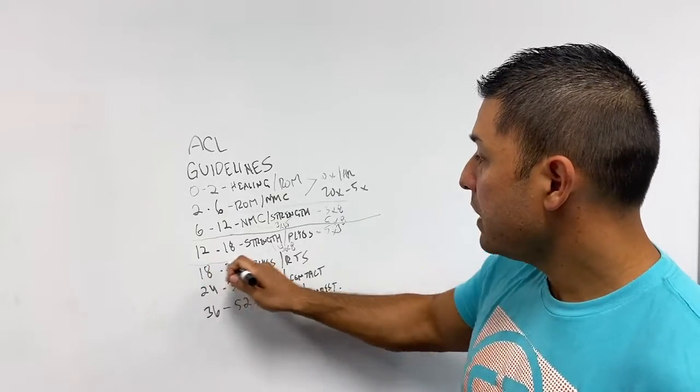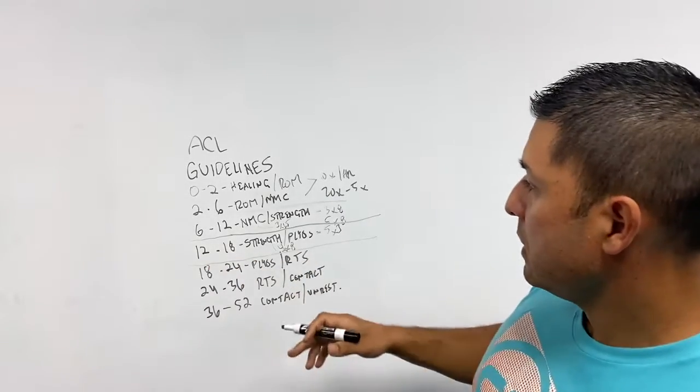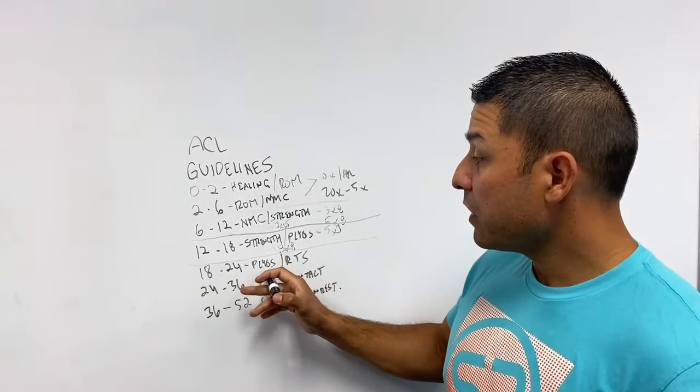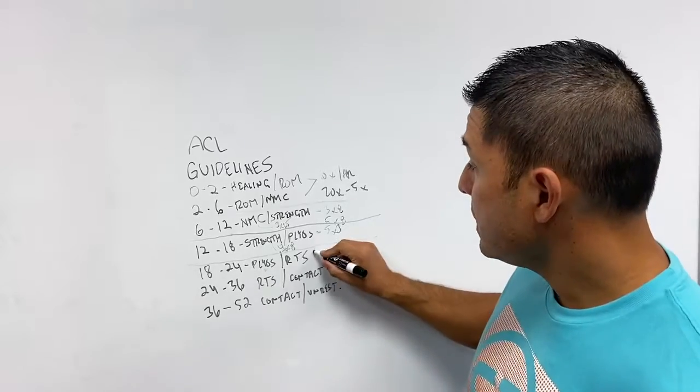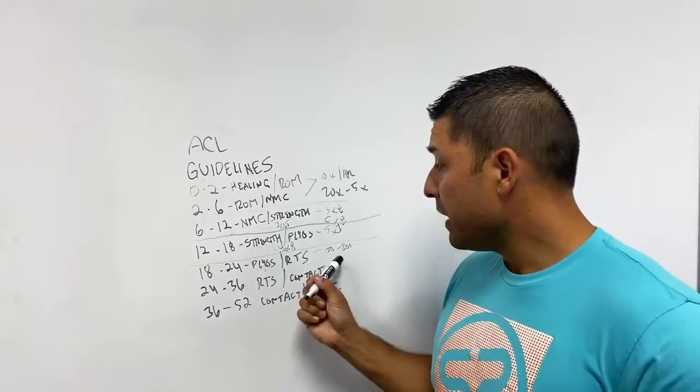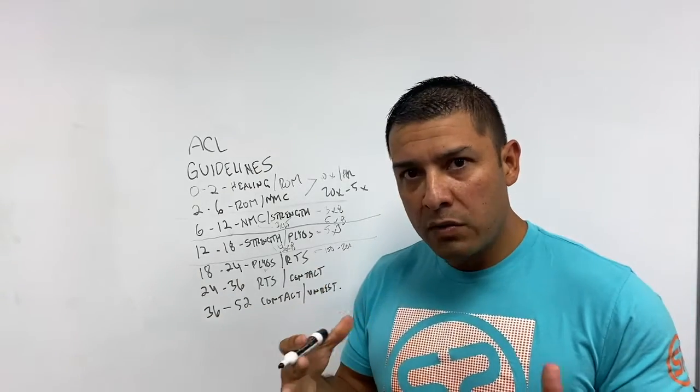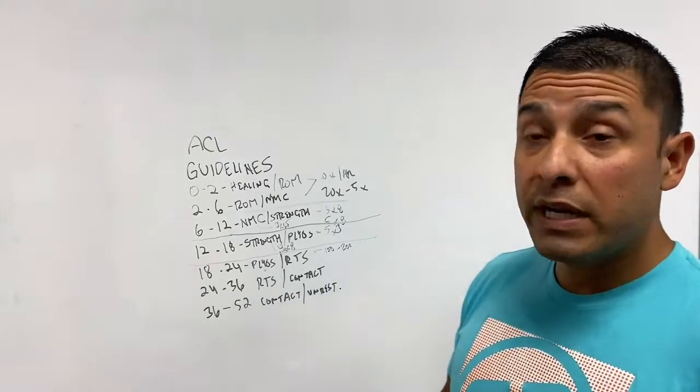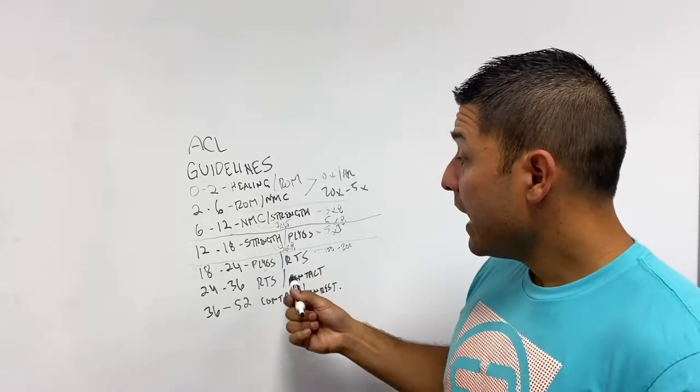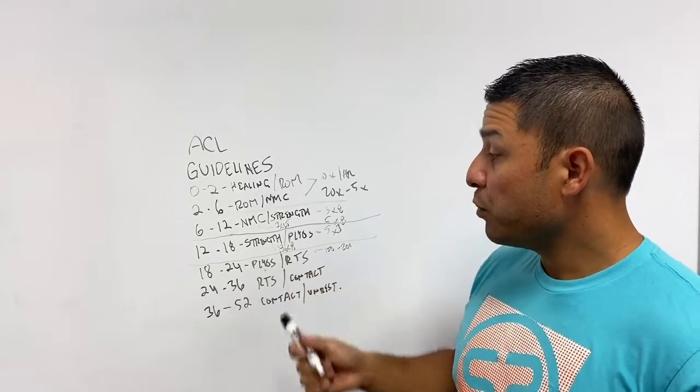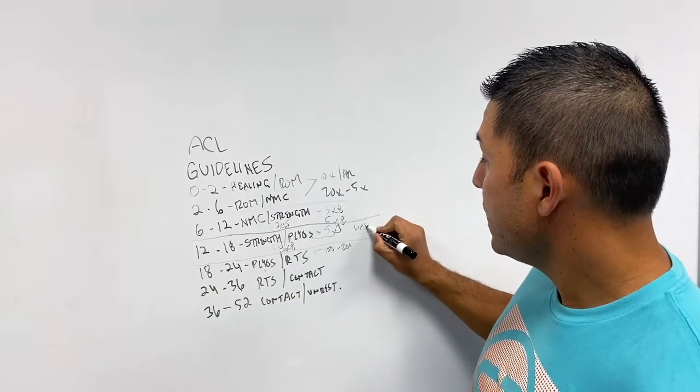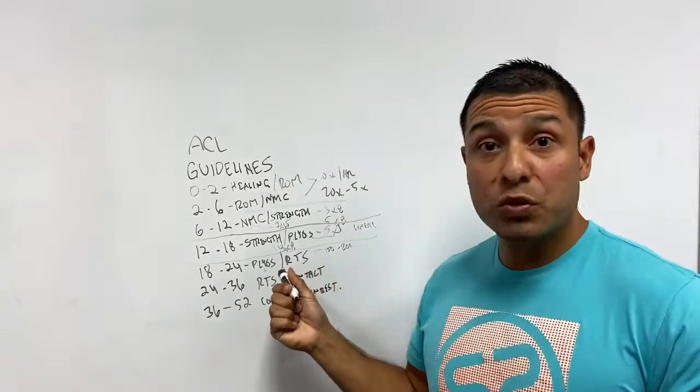As you move on, now you're at four to six months. You're now primarily focusing on those plyos and return to sport. Just make sure an easy tip that I give the team is that as you progress into plyos that you don't do more than 150 to 200 total reps of plyos just to get people started. And then as they get in return to sport.